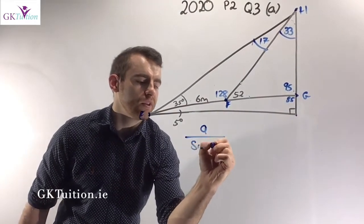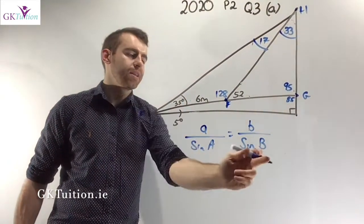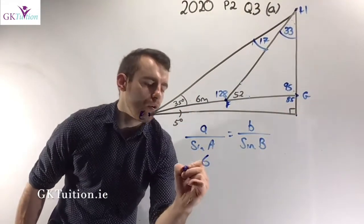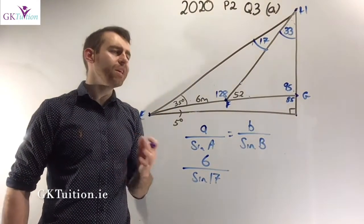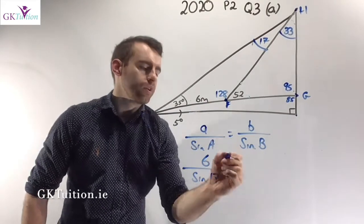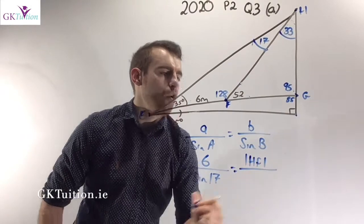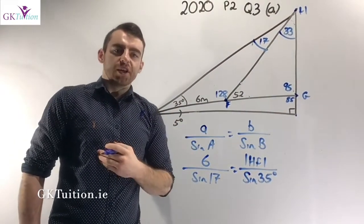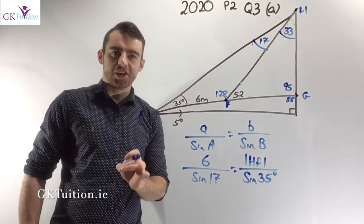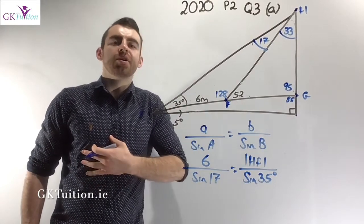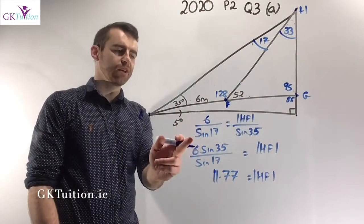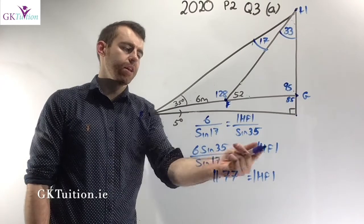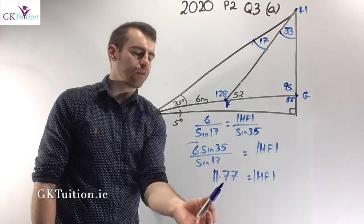The sine rule states that a over sine A equals b over sine B, where capital A and B are angles and small a and b are sides. So in this case: 6 over sine 17 equals HF over sine of its opposite angle. The angle opposite HF is 35 degrees, so it's sine 35. I have one equation and one unknown. Multiplying both sides by sine 35, I get HF equals — plugging into the calculator — HF works out as 11.77.